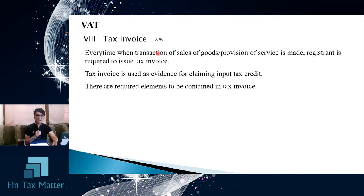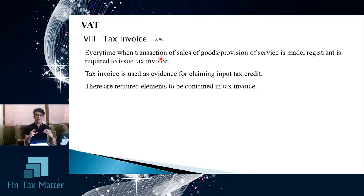The tax invoice is used as evidence for claiming input tax by the buyer, and as evidence for submission of output tax by the seller. The numbers will match and can be cross-checked in the system. The required elements depend on the type of tax invoice.